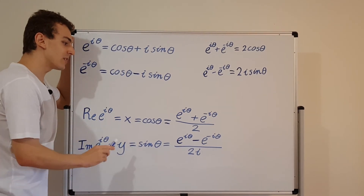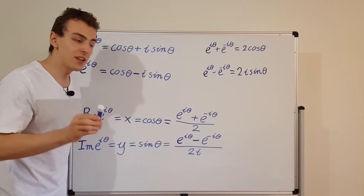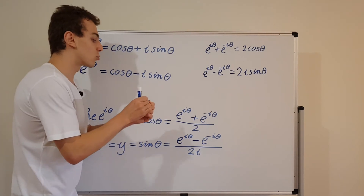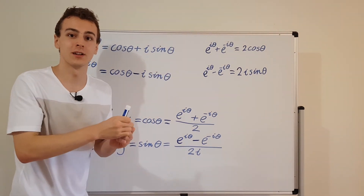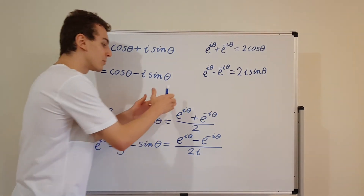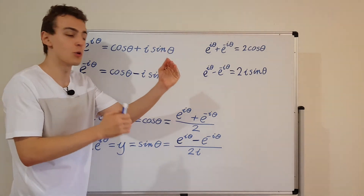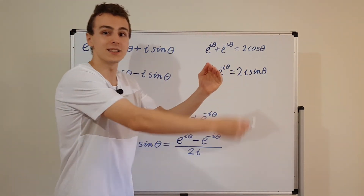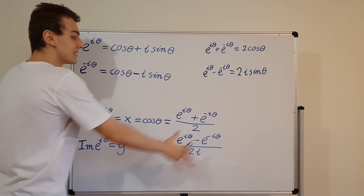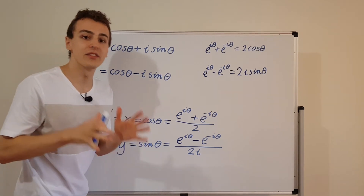These results are specifically for complex numbers with a magnitude of 1. If the complex number does not have a magnitude of 1, you need to introduce the radial distance from the origin — the magnitude of the complex number — and multiply these expressions by that magnitude. That moves the point onto a circle whose radius equals the magnitude. But for all the expressions here, we're working with numbers that sit on the unit circle.